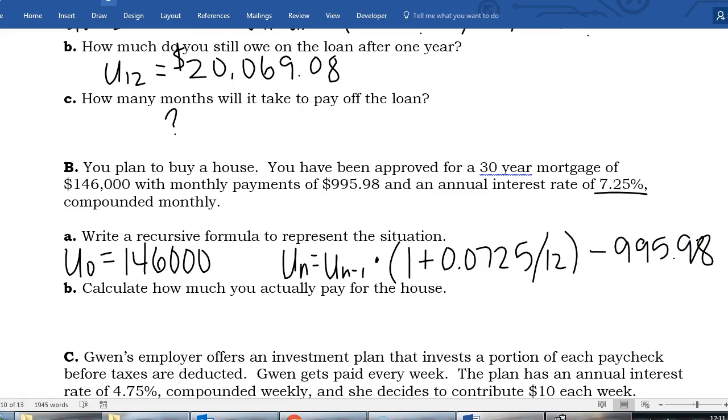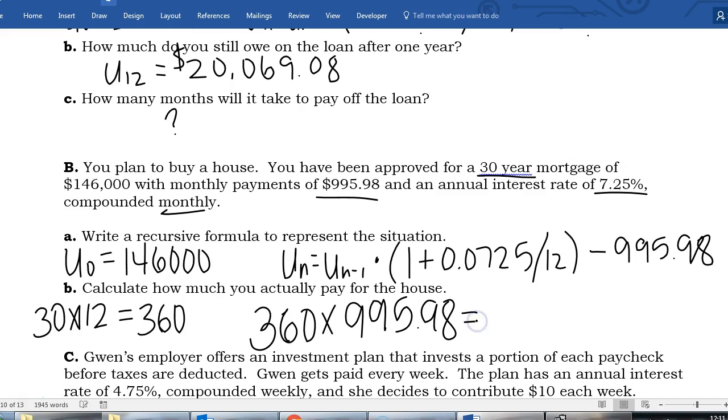Now we're actually going to calculate how much you actually pay for the house. So if I'm making 30 years worth of payments and I'm paying once a month, if I do 30 times 12, that means I'm actually making 360 payments. And if I do my 360 payments times my payment amount $995.98, this will tell me how much I actually pay for my house.